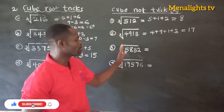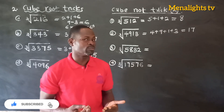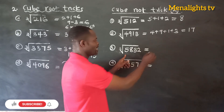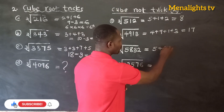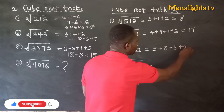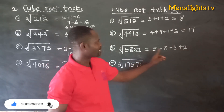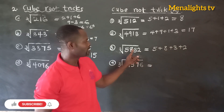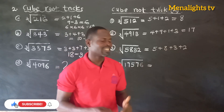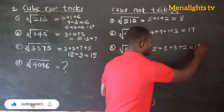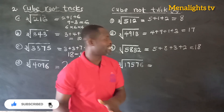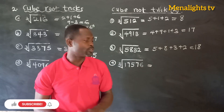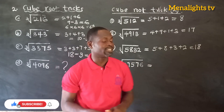Now the cube root of 5,832: we add the digits — 5 plus 8 plus 3 plus 2, which gives us 18. So 18 is the cube root of 5,832.